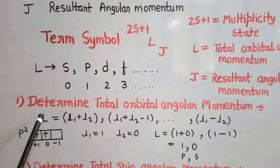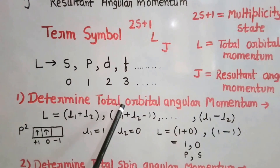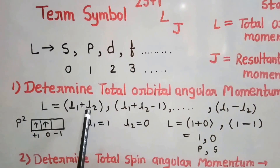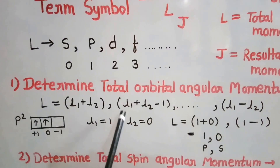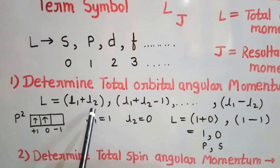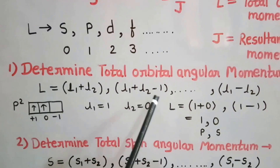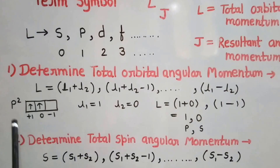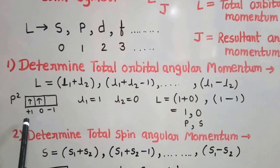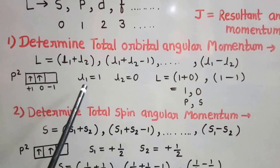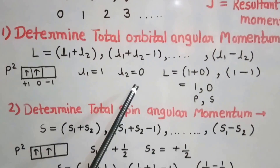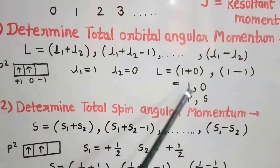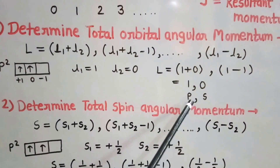In order to get the term symbol, we follow these steps. The first step is to determine the total orbital angular momentum L, obtained by the vectorial combination of the orbital angular momenta of the electrons. So L will be L1+L2, L1+L2−1, and so on down to L1−L2. For example, consider the P2 state where there are 2 electrons, one in the +1 orbital and one in 0. So L1=1 and L2=0, giving L values of 1 and 0, denoted by P and S respectively.